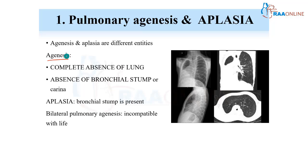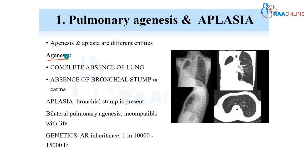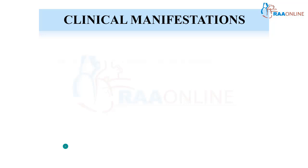This is mostly a unilateral condition, because bilateral pulmonary agenesis is incompatible with life. It is a relatively uncommon condition, occurring between 1 in 10,000 to 1 in 15,000 live births, and it is inherited in an autosomal recessive fashion.